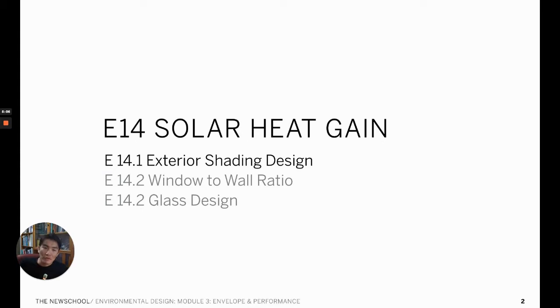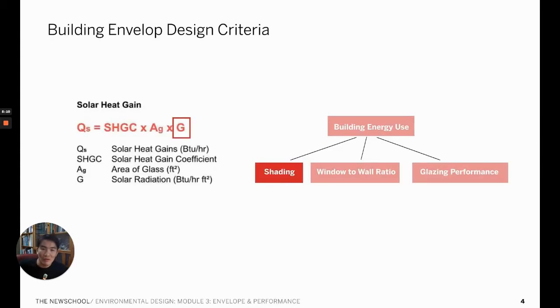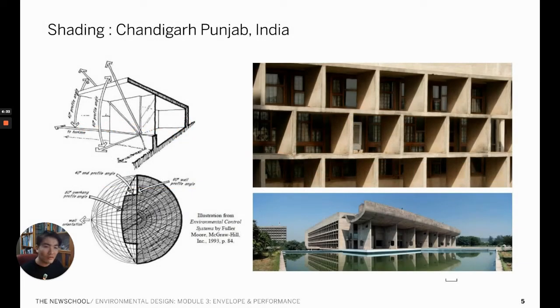We will first discuss designing the exterior shading. The design of exterior shading is related to the G portion that is controlling the solar radiation heating the glass. The first kind of modern brise-soleil, which works as a major architectural expression, was done by Le Corbusier in Chandigarh Punjab, India.